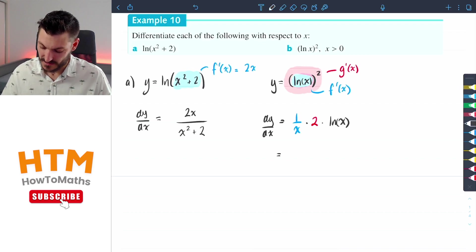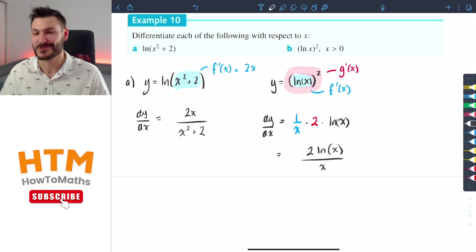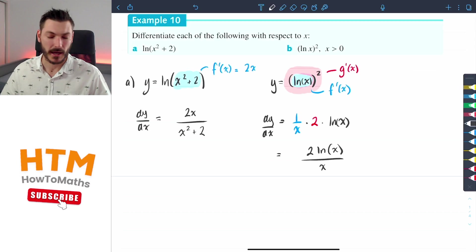We can tidy this up now and say it's going to equal 2 ln x divided by x. And yes again, those x's can't cancel because the x on the numerator is stuck inside the log function so they can't just cancel out.